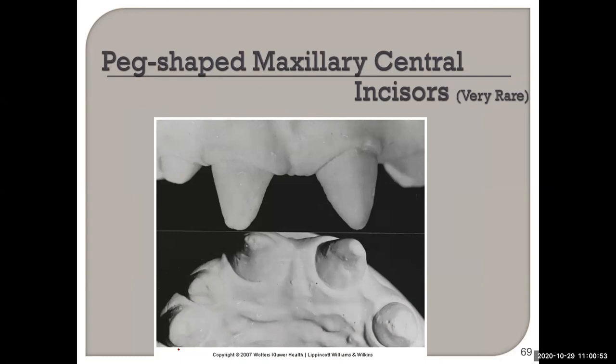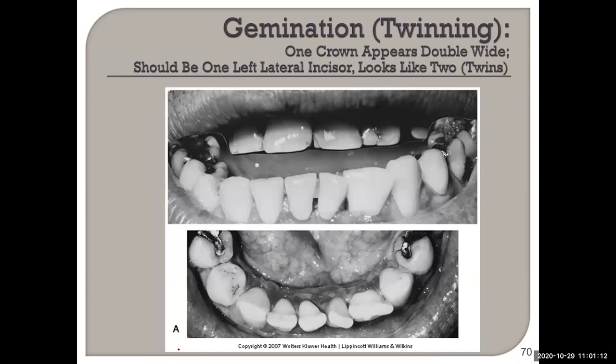Peg-shaped maxillary canines — when you see patients like this, there are usually other congenital disorders present as well. This is very typical of ectodermal dysplasia, which you'll learn about in pathology. These patients usually have multiple things going on.